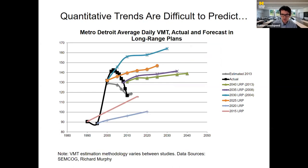Our track record on forecasting quantitative change is not very good. This chart shows a series of long-range transportation plans produced by SEMCOG, the MPO for the metropolitan region in Southeast Michigan around Detroit. Before the boom in the late 90s, the plans under-predicted how much driving there would actually be. Near the peak of the boom, they way over-estimated future driving levels. Then they didn't anticipate the recession, as well as changes in lifestyle and land use resulting in decreased driving. The point is: a forecast-based plan is always vulnerable to being wrong in more than one direction.